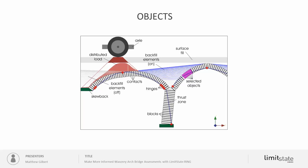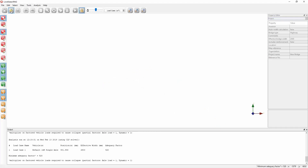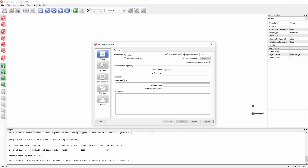In simple terms, if you push into those backfill elements you mobilize whatever passive pressure has been prescribed. If you pull away from them, the default is to apply no pressures at all — so the default is to neglect active pressures and model passive pressures. The model components include blocks, contacts, and following an analysis you can see the line of thrust or thrust zone, hinges, active backfill elements, and the dispersed load from the axle. Rather than discuss this in more detail in slides, let's get the software open and take a look at how we set up and solve a problem.